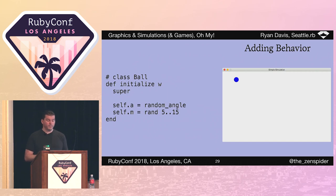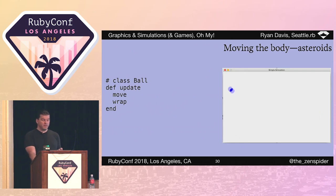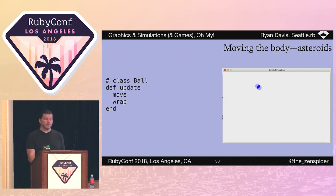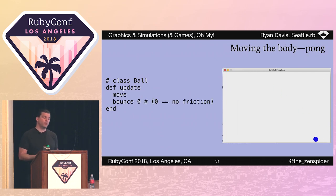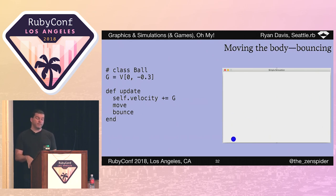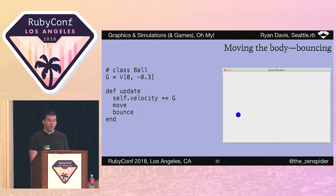We can add an initializer to ball, call super, and then set both the angle and magnitude to random values — the x and y of the body is already random via super. To add behavior, I add an update method to ball. We're going to tell it to move and then wrap around if necessary — similar to how the classic game Asteroids works. If we change from wrap to bounce with zero friction, we get behavior similar to Pong. And if we add a small down vector to the ball's velocity and bounce with default friction, then we simulate how a real ball would bounce. We've got three very different behaviors with three very small changes.